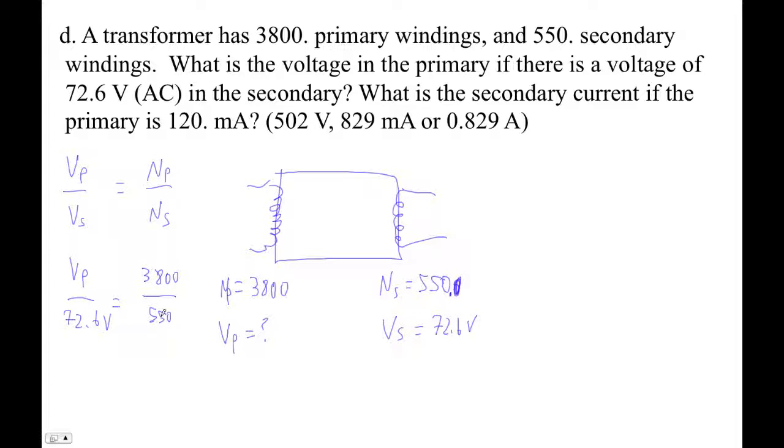So I'm going to go this times this divided by that. 72.6 times 3,800. Sometimes when I use the formula, I get it wrong because somehow I get lost in that. 501.6. So the voltage in the primary is 501.6 volts.